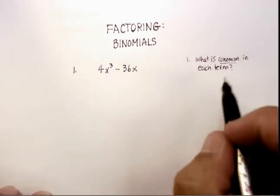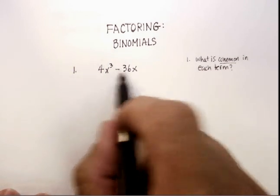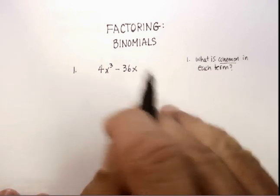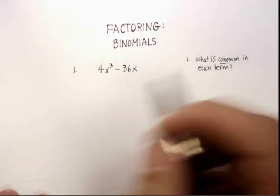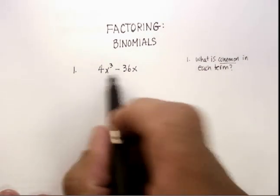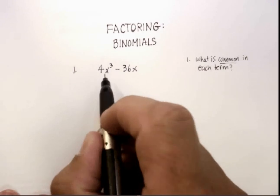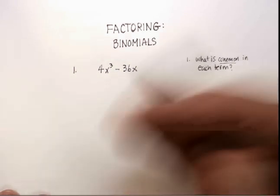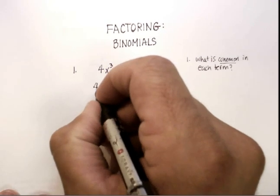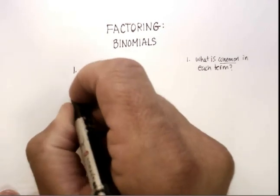When you look at this particular binomial here, you'll notice that each term does have common aspects to it, doesn't it? For example, 4 is a factor that goes into both terms. x is a factor that goes into both terms. So what you want to do is factor out the 4x first.